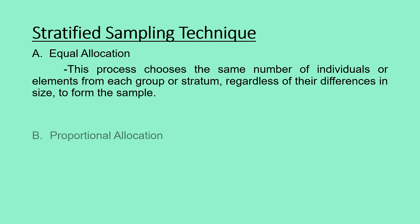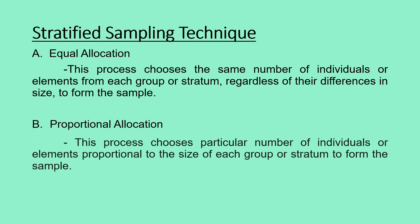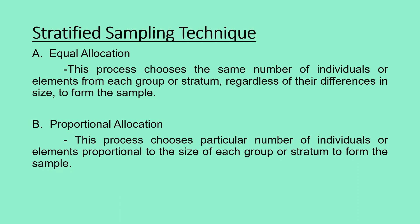The other type is proportional allocation. This process chooses a particular number of individuals or elements proportional to the size of each group or stratum to form the sample. For further explanation, I will be giving you some examples.